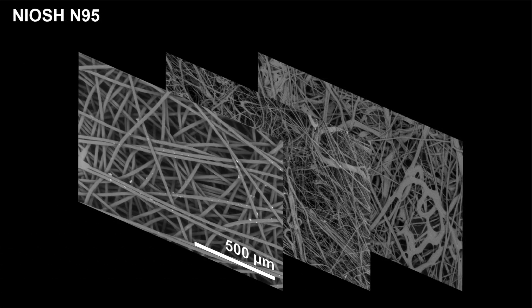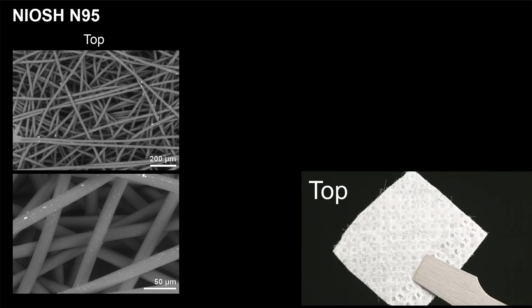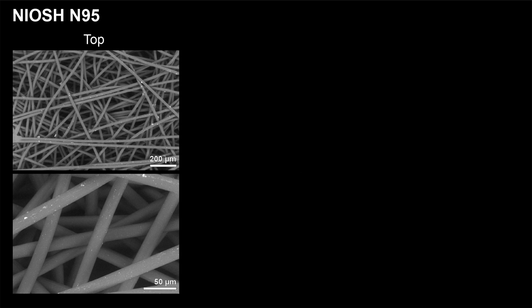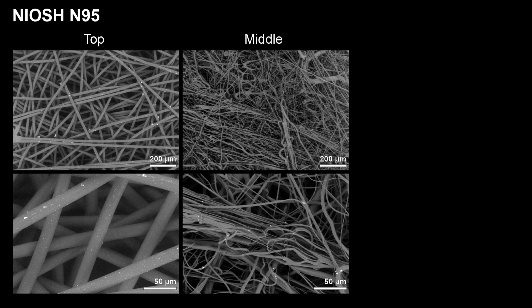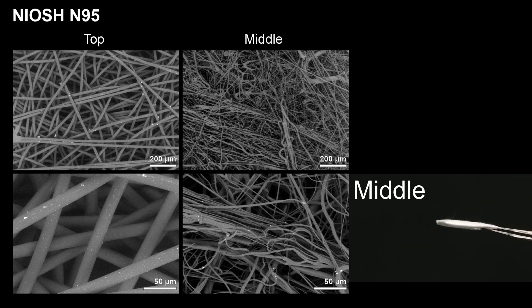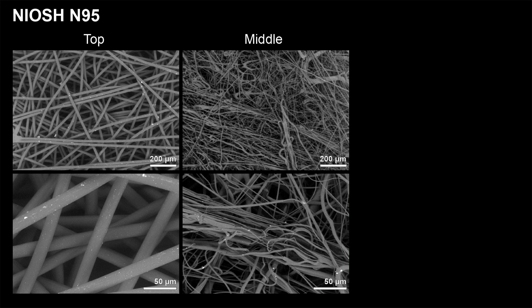N95 respirators are made of 3 layers, similar to level 1 and level 3 masks. The average diameter of the fiber in the top layer is 18 microns; however, the fiber density here is much higher. As with all masks, the most important layer is the middle layer. For the N95, the middle layer is very thick and is composed of very thin fibers with diameter less than 1 micron, as well as some thicker ones. The diameter of the thin fibers is quite similar to the ones on the level 1. However, when looking at the high magnification image, it is clear that the thin fibers are much more densely packed in the middle layer of the N95 than the level 1 mask — the spacing between the fibers is much tighter.